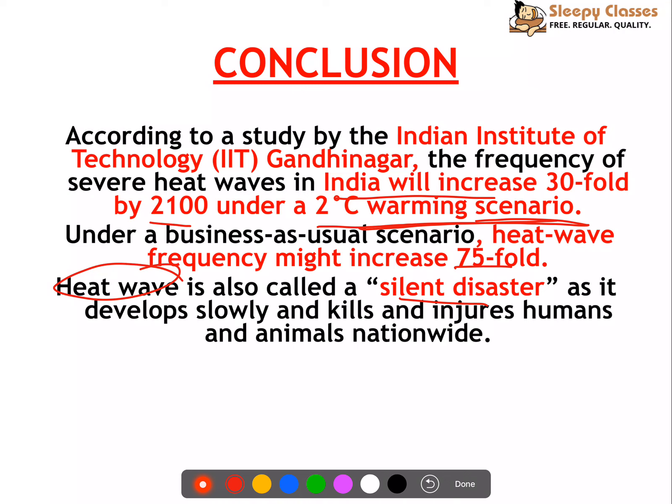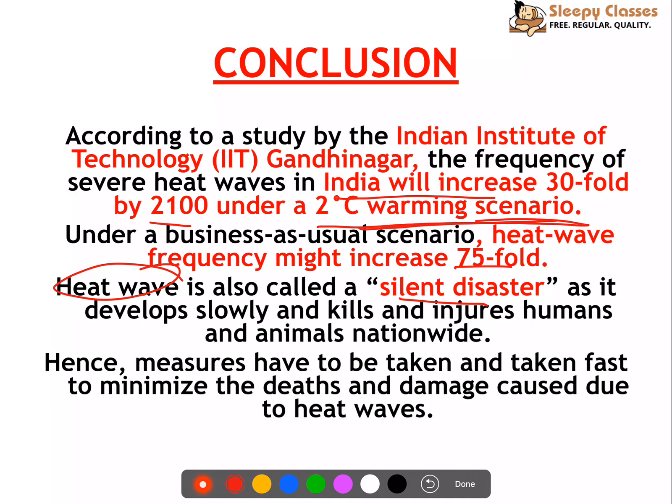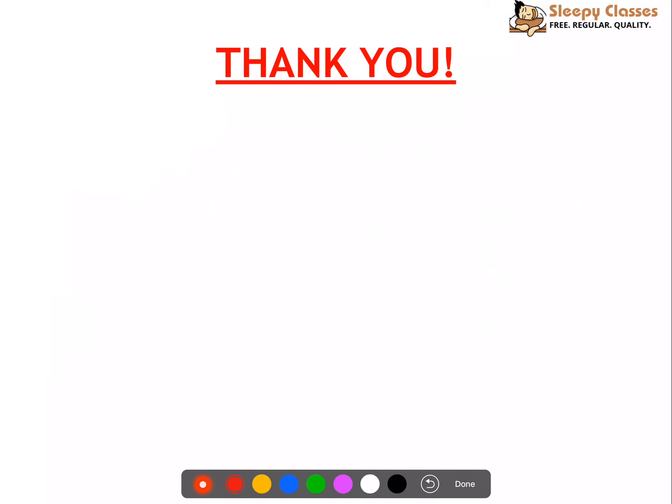Heat wave is called a silent disaster because unlike a tsunami where deaths are immediately visible, in a heat wave we often don't know whether people died due to the heat or some other issue. Additionally, it develops slowly and affects animals and humans alike, unlike other disasters. Hence, measures have to be taken quickly to minimize the deaths and damage caused by heat waves. This has been a comprehensive coverage of the heat waves question so that you can attempt any related question in your exam.